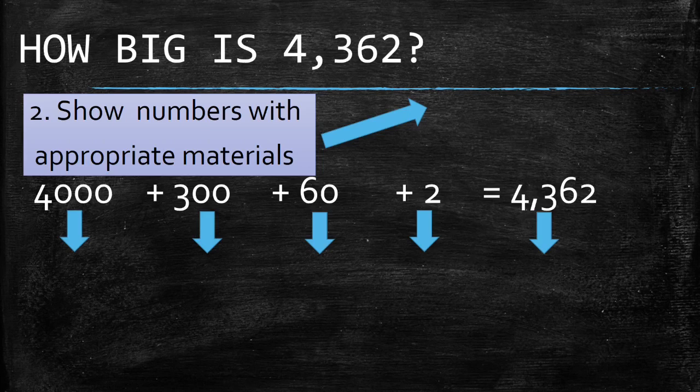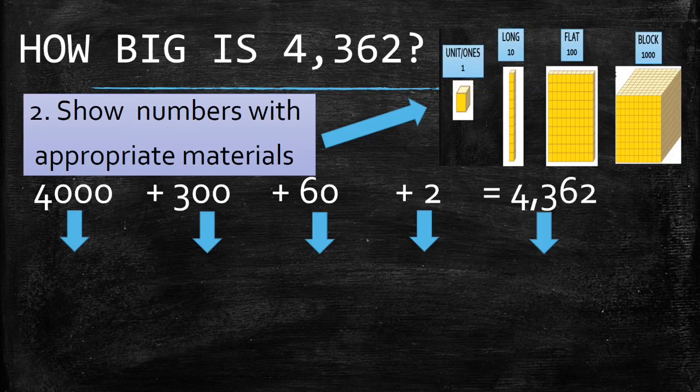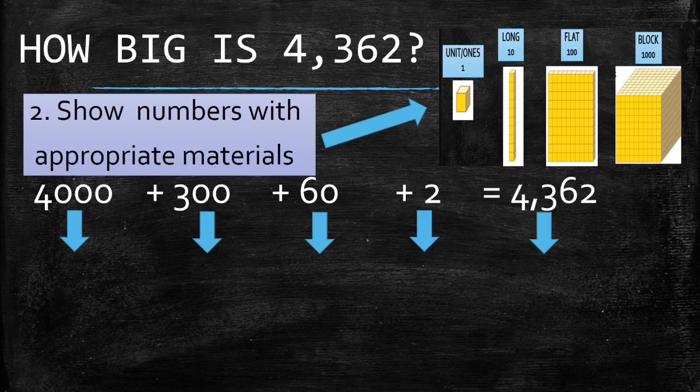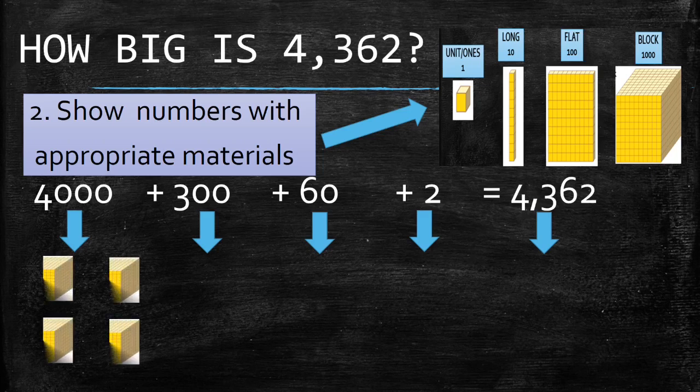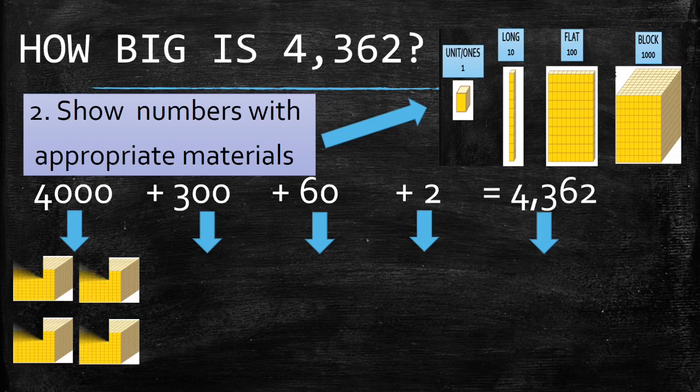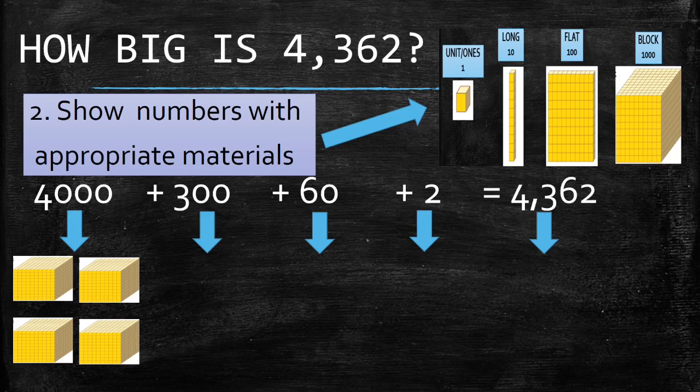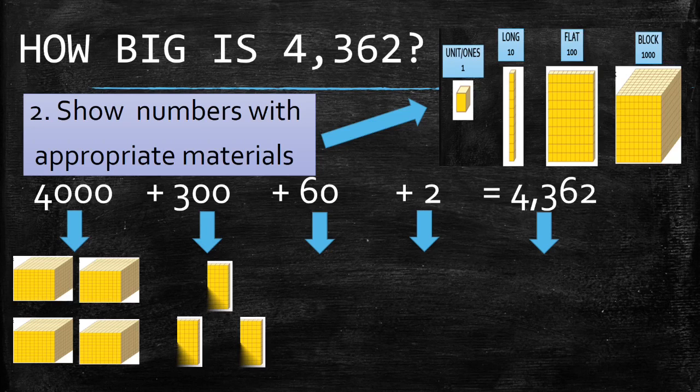Next, show numbers with appropriate materials. The materials that we're going to use are unit, long, flat, and block. How many blocks are we going to use to represent 4,000? Four blocks are we going to use to represent 4,000. How about 300? That's right. We're going to use 3 flats to represent 300.